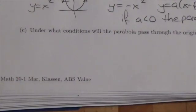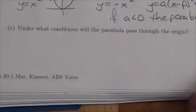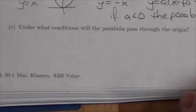Under what conditions will the parabola pass through the origin? This is kind of a strange question here.